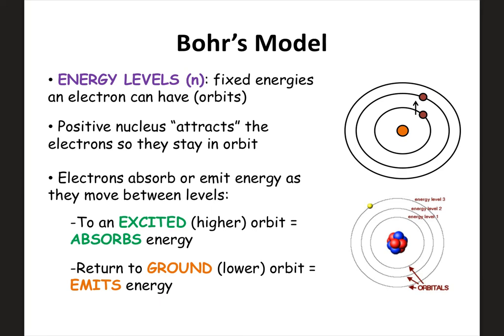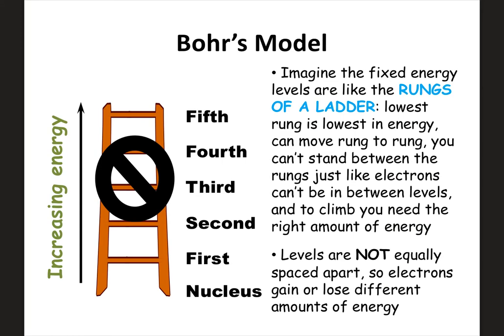Bohr's model is definitely a better representation of the atom even though it's not perfect. These orbits are referred to as energy levels and we use the letter n to denote that. It's helpful to think of Bohr's model like a ladder — every rung of the ladder is like one of those energy levels. If you're at the very bottom you'd be at the nucleus, the first rung is your first energy level, and so on. Electrons are like climbing a ladder: if you have the right amount of energy you could make it to the second step, but you can't hover in between steps.